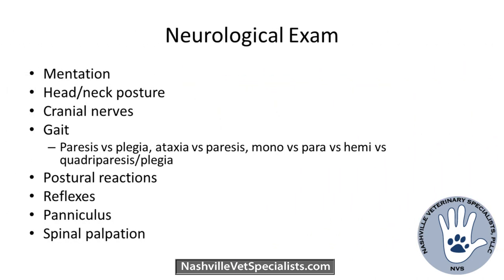The things you're going to assess for the neurologic exam include: mentation, head and neck posture, cranial nerves, the gait, postural reactions, proprioception, reflexes, paniculus, and then palpation — is this animal painful?